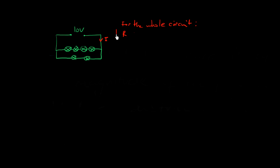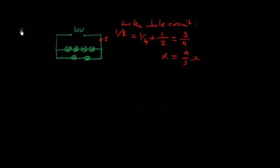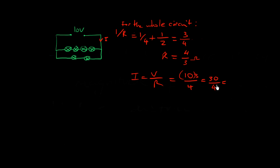Using 1/R = 1/R₁ + 1/R₂, we get 1/4 + 1/2 = 3/4, so R = 4/3 ohms for the whole circuit. The total current is the EMF divided by total resistance: 10 volts divided by 4/3 ohms equals 7.5 amps.